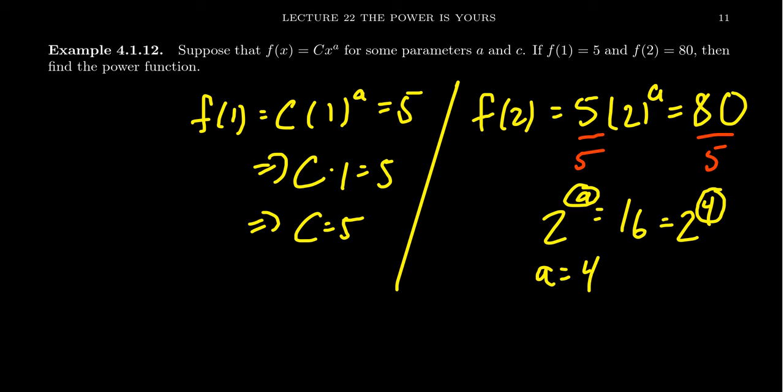And so therefore the function we were looking for was f of x equals 5 x to the 4th. This is a power function which will contain the points 1 comma 5, which is what we saw right here, and it'll also contain the point 2 comma 80.